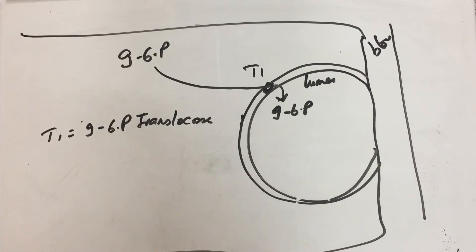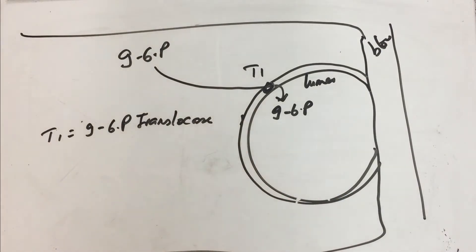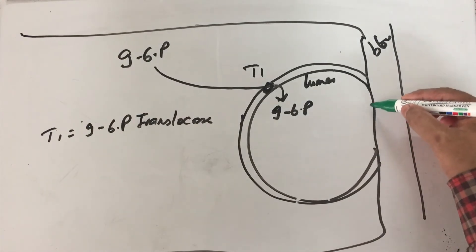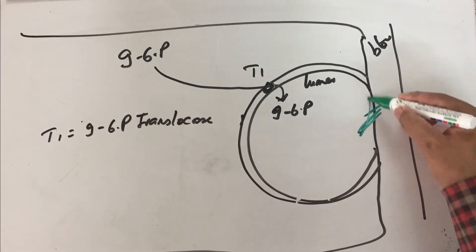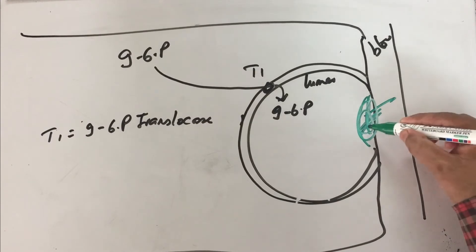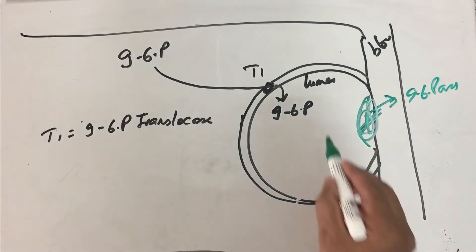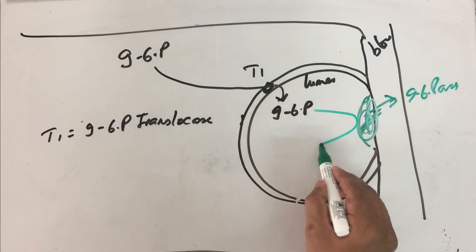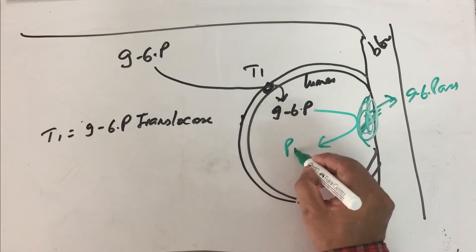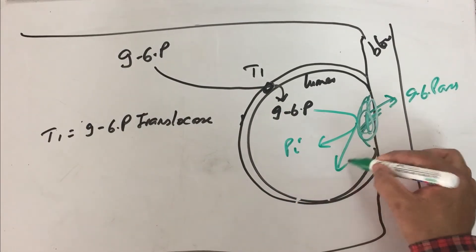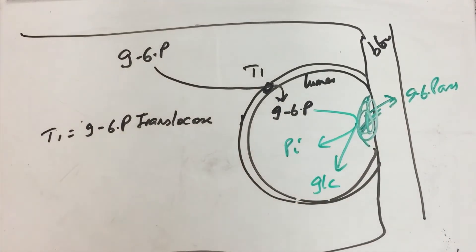Once glucose-6-phosphate is inside, this is acted upon by our enzyme. Now the glucose-6-phosphatase enzyme is present here, in this membrane. This enzyme will act on glucose-6-phosphate. So you are going to get two things. One is inorganic phosphate, the other one is glucose.